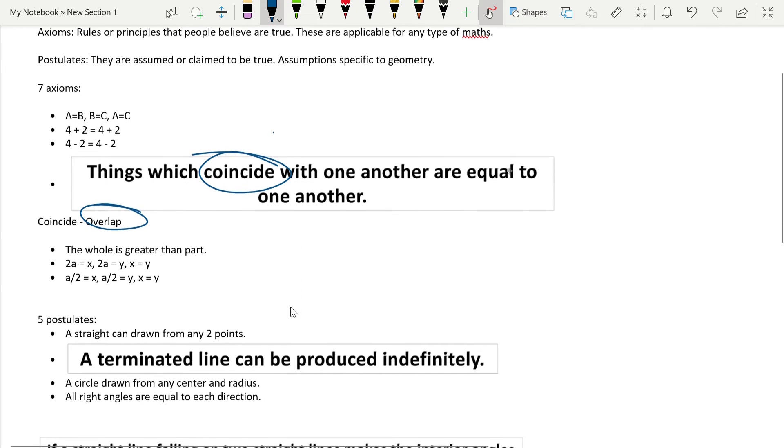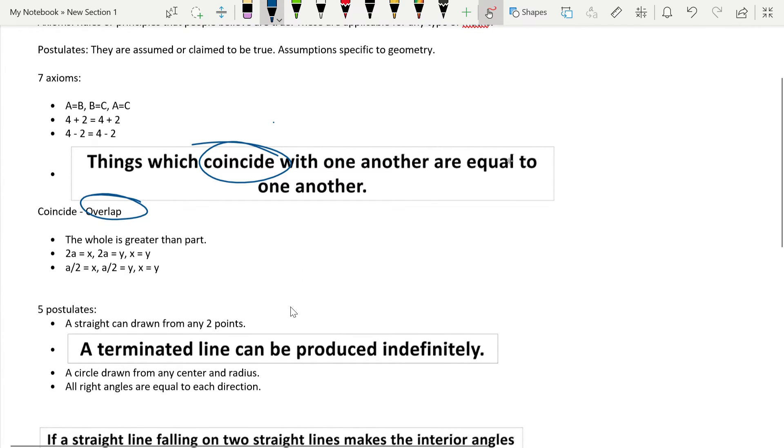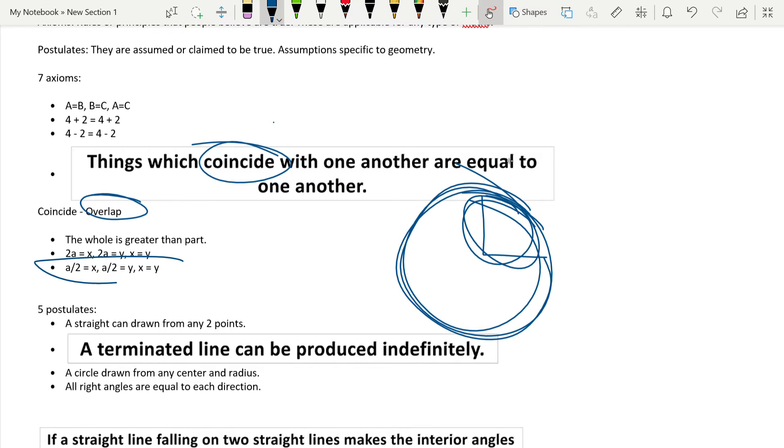Let's move on. The whole is greater than a part. Meaning if you have a whole circle and there's a part, this part is smaller than the whole. Meaning the whole is bigger than the small, right? If 2a is equal to x and 2a is equal to y, meaning x is equal to y. That's like the other one, the first one that we did. If a by 2 is equal to x and a by 2 is equal to y, meaning x is equal to y. Very easy. It's self-explanatory, I can't really make it easier.